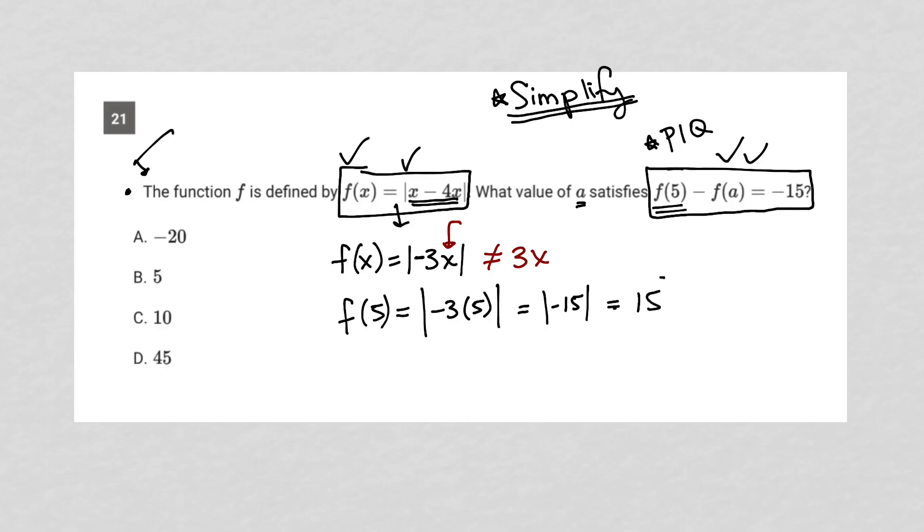So f of 5 equals positive 15. I'm going to replace f of 5 with positive 15 now. So this equation here will now become 15 minus f of a equals negative 15. I can combine like terms again. I can subtract 15 from both sides. So my 15 is canceled out on the left. I now have negative f of a equals negative 30. I can divide both sides by negative 1 so that I have now a positive f of a equals positive 30.